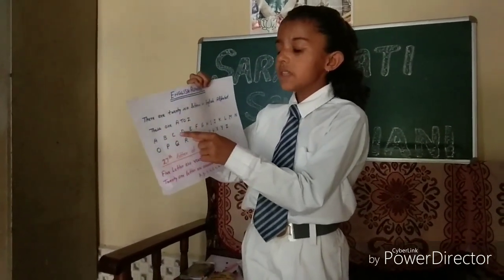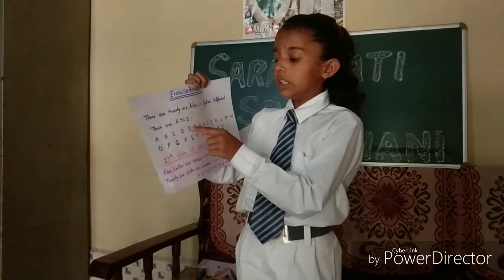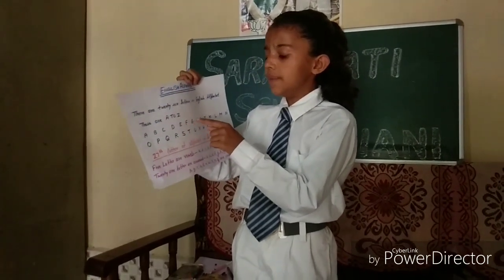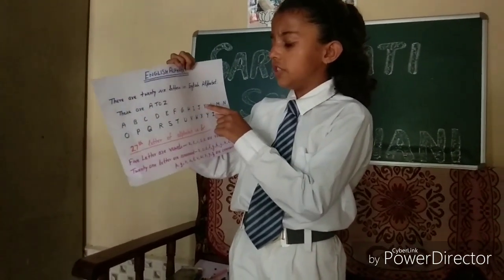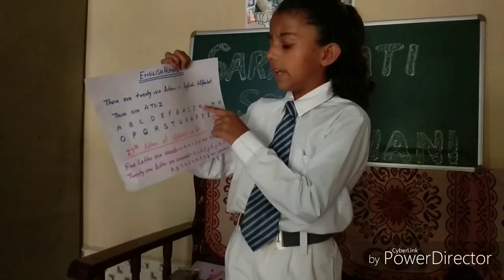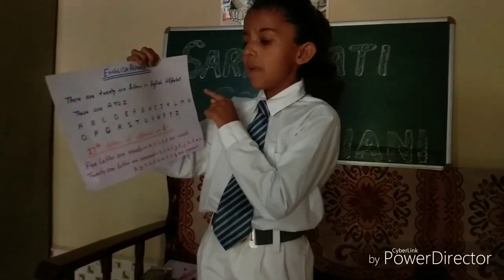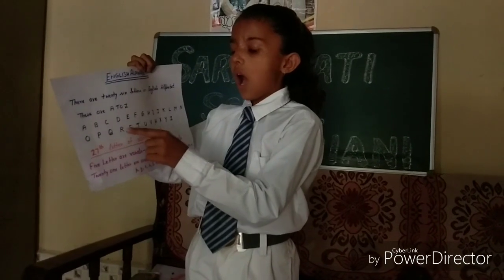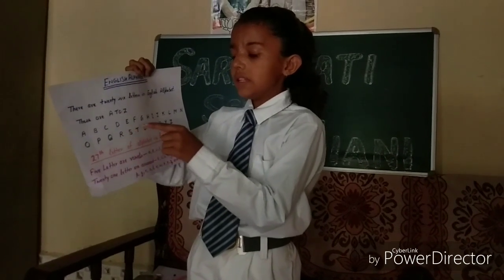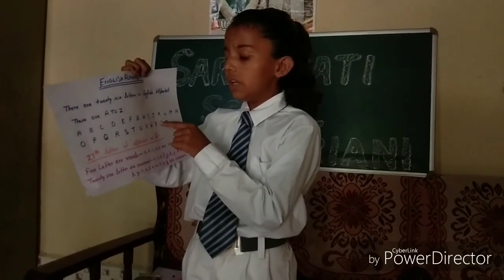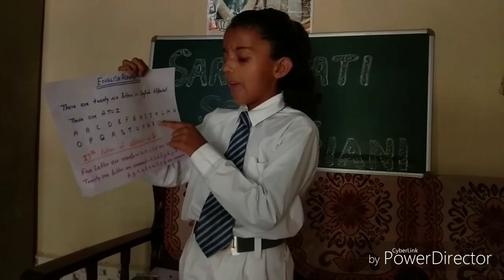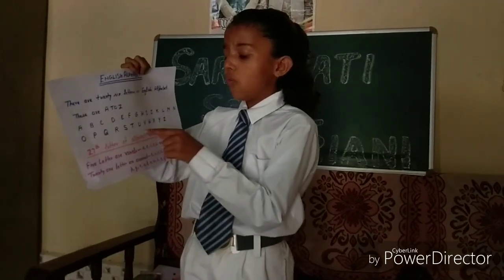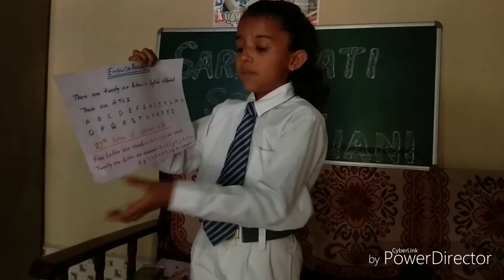A, B, C, D, E, F, G, H, I, J, K, L, M, N, O, P, Q, R, S, T, U, V, W, X, Y, Z. The 27th letter of the alphabet is S.